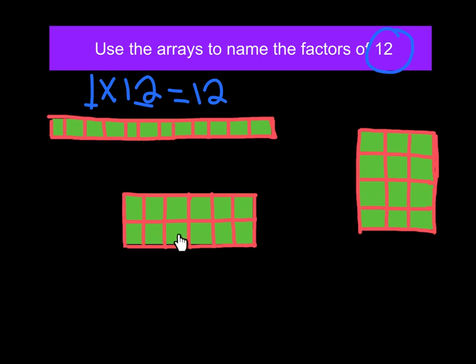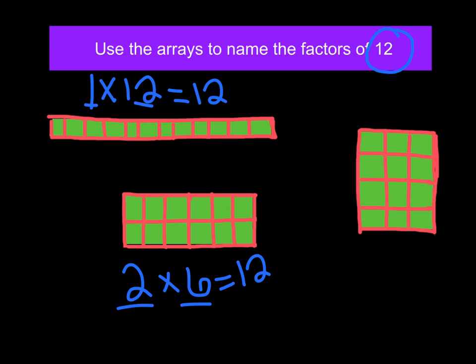I have 2 rows, so I know my first factor is going to be 2. Counting how many are in each row — 6. So 2 and 6 are factors, and that equals 12. Let's come over to another array: I have 4 rows, so 4 will be one of our factors. Counting how many are in each row — 3. So 4 and 3 are those factors for this array, and that equals 12.